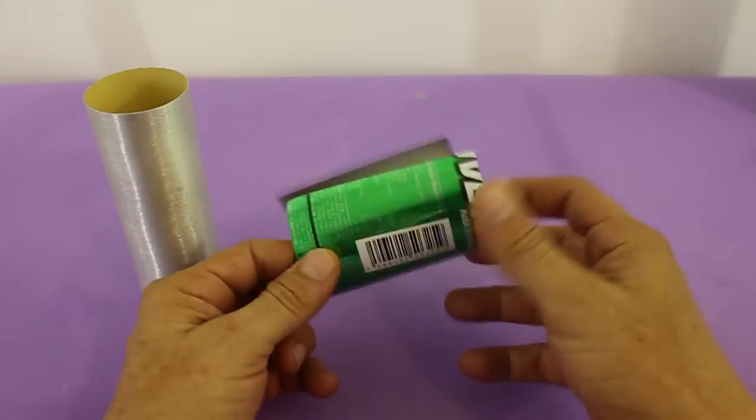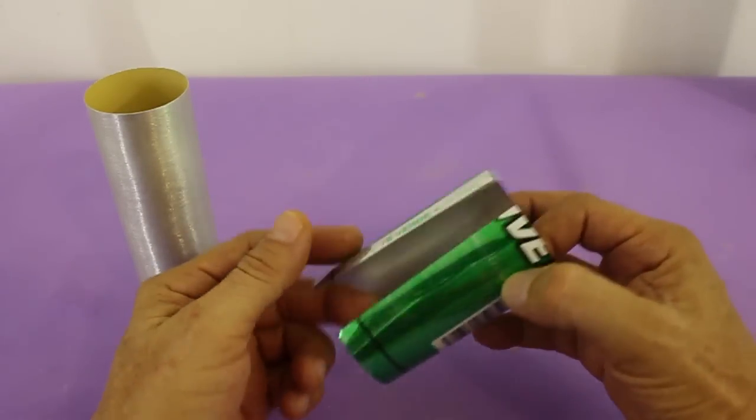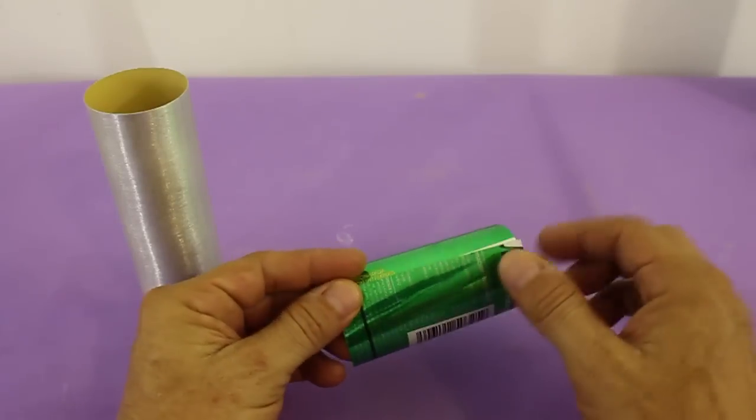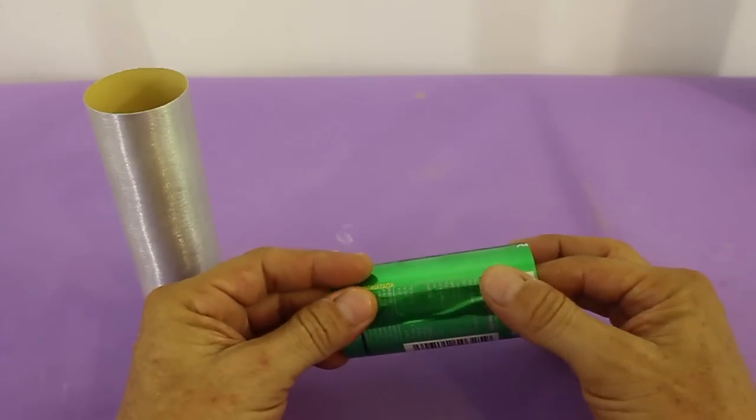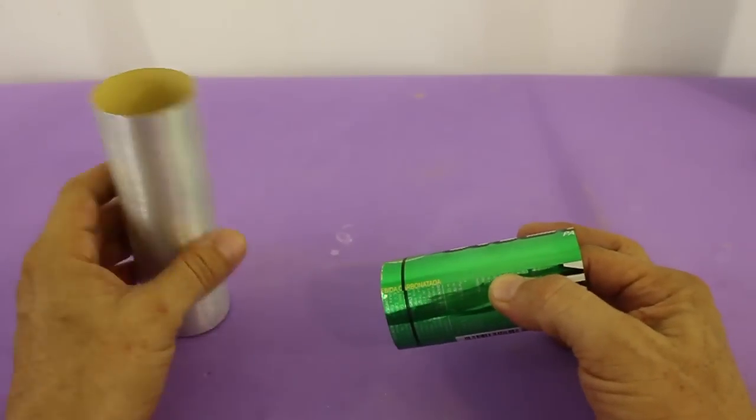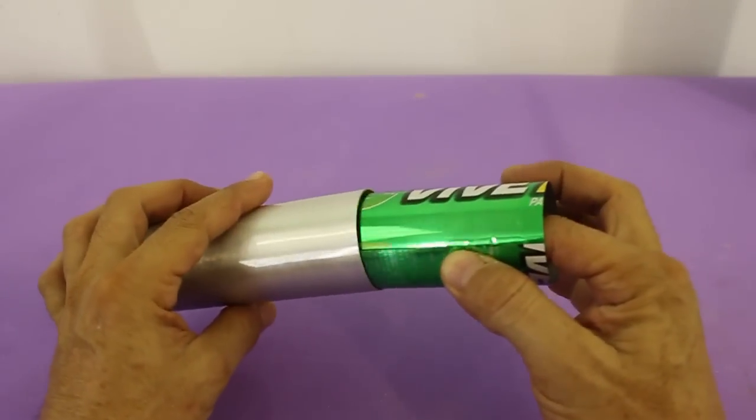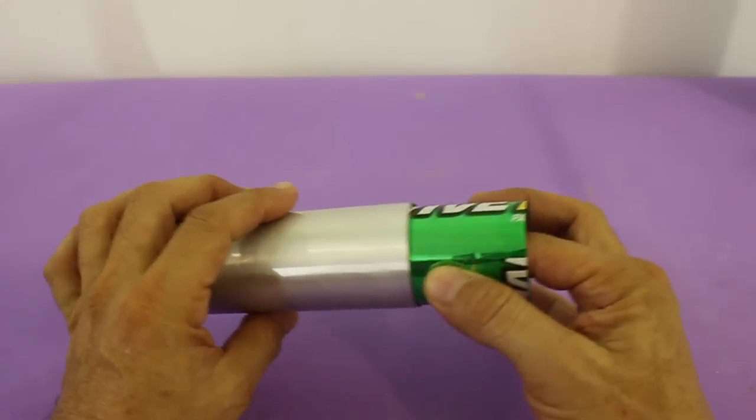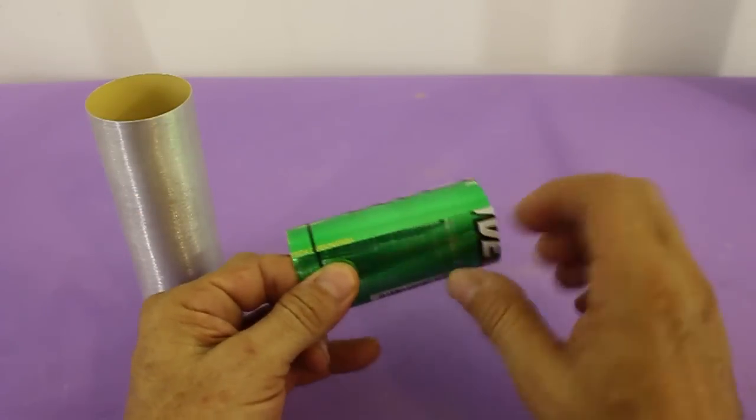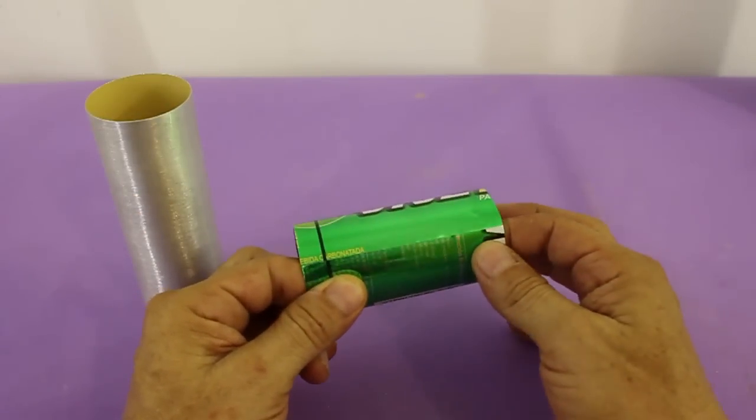Cut a soda can to form the piston. It should have a length of 85mm and a diameter 3-4mm less than the cylinder so it can move freely inside the cylinder. You can glue it with cyanoacrylate or super glue.